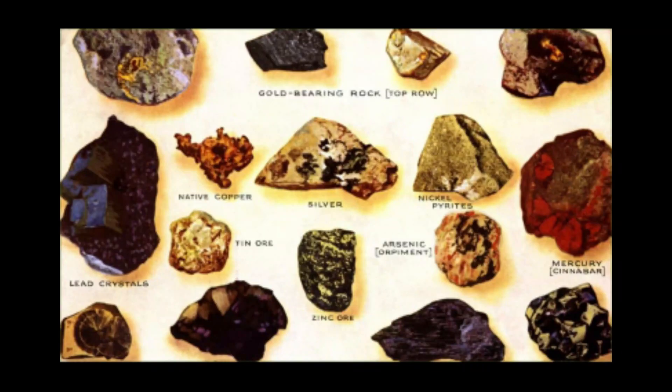In nature, most metals occur in a combined state as minerals. Nearly all rocks contain some metallic minerals. Often, the amount of metal present in a rock is so little that it is too expensive to mine. Rocks from which it is profitable to mine and extract metals are called ores. The series of processes carried out to extract pure metals from their ores is called metallurgy.